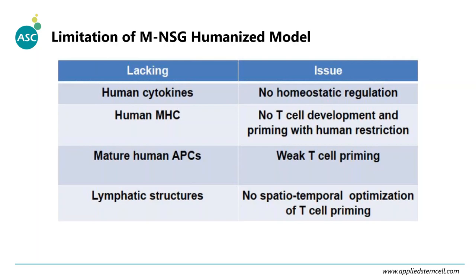There are some limitations to these humanized mouse models. They lack human cytokines, which are important for regulating differentiation of cells from hematopoietic stem cells. They also lack human MHC molecules, mature human antigen-presenting cells, and important lymphoid organs like the thymus and spleen, which weakens T cell priming and development.